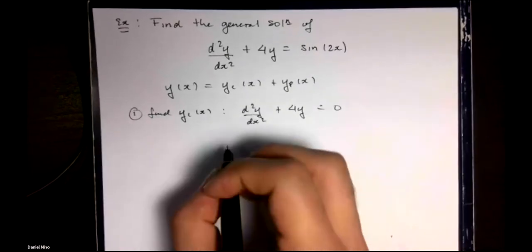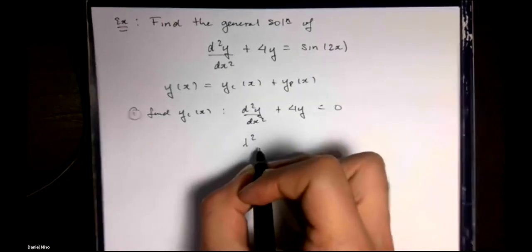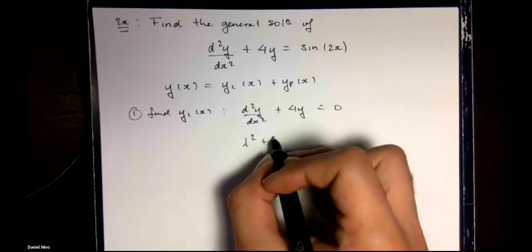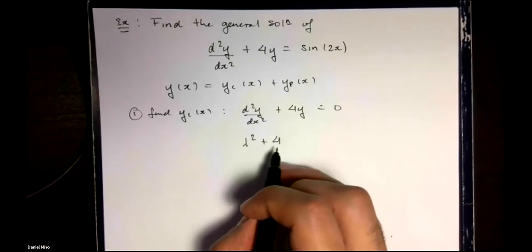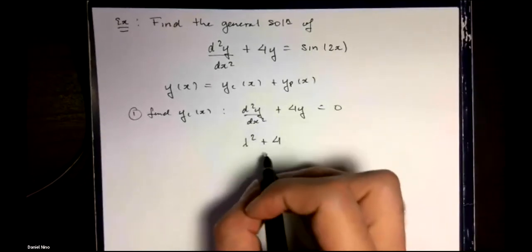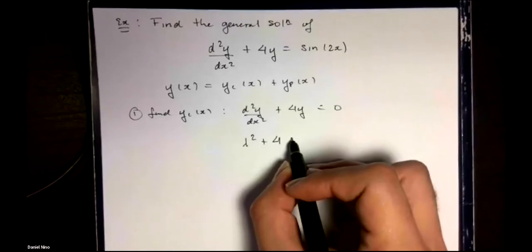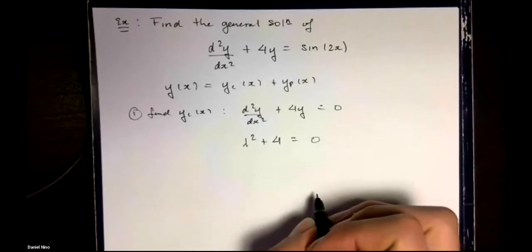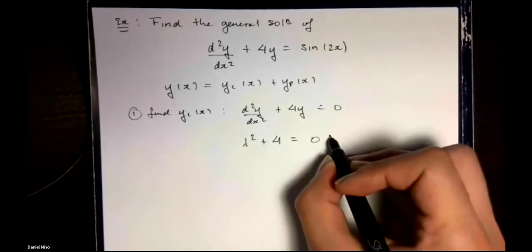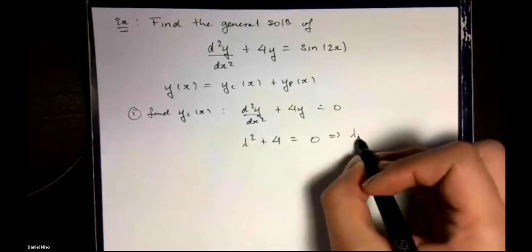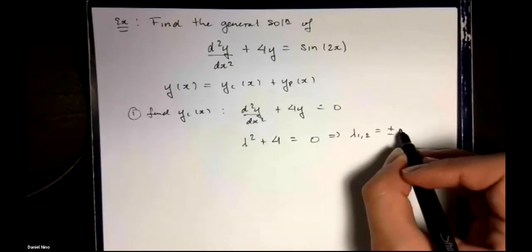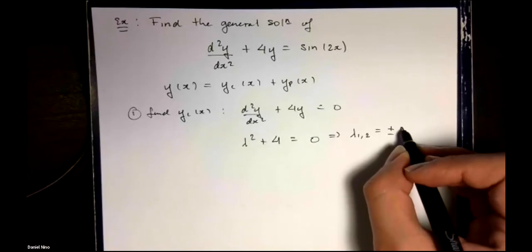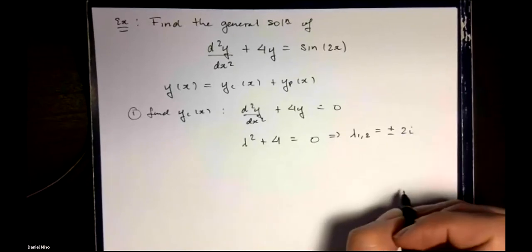In this case, taking the second derivative leaves us with lambda squared, and this just leaves us with a four for our auxiliary equation. This has to be equal to zero. The roots of this equation are when lambda 1 and 2 is equal to plus or minus 2i.